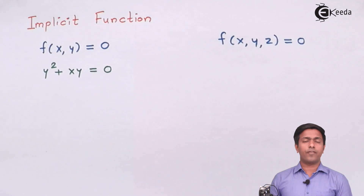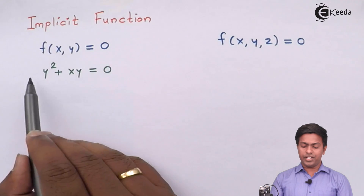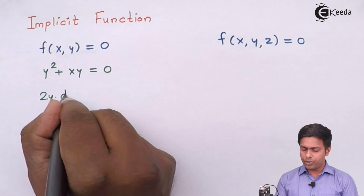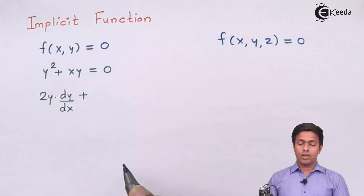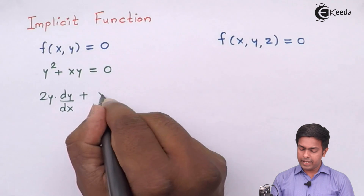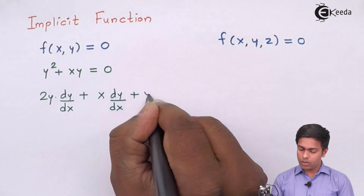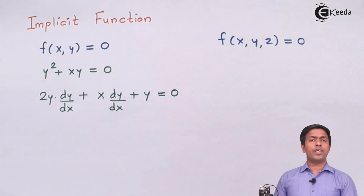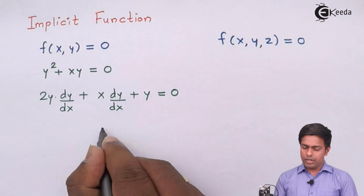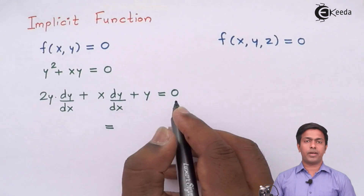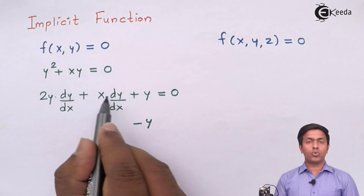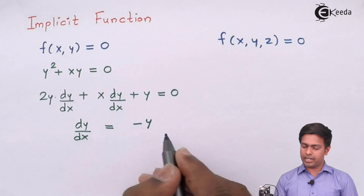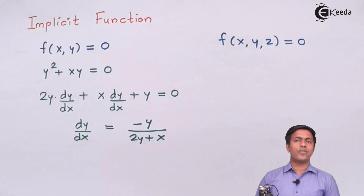If somebody is asking us to find dy/dx, what we do is differentiate each term with respect to X. Differentiating Y² with respect to X gives 2Y·(dy/dx), and applying the UV rule on XY gives X·(dy/dx) + Y·1 = 0. Taking all dy/dx terms together: (2Y + X)·(dy/dx) = −Y, so dy/dx = −Y/(2Y + X).